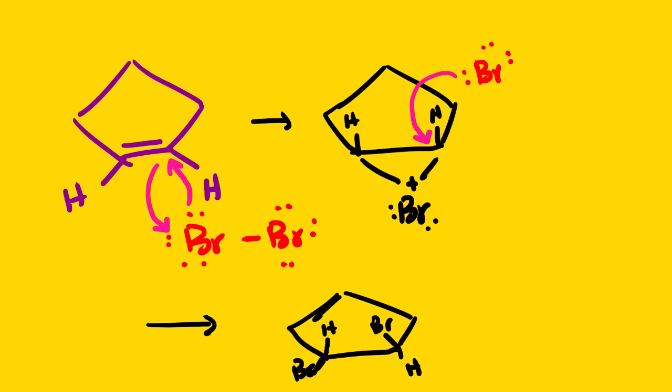By the way, this is trans, and then we know that the enantiomer will actually be like this. Let's see, it will be Br, H and Br, H.